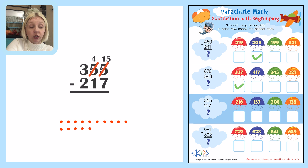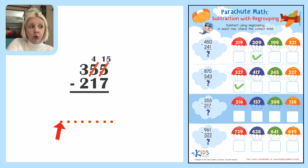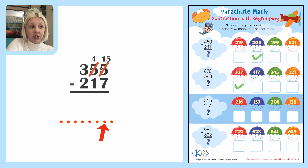I've drawn fifteen dots and I need to take away seven. Count with me as I take away seven — one, two, three, four, five, six, seven. This should give me my total: one, two, three, four, five, six, seven, eight. So the answer here in the ones place is going to be eight.